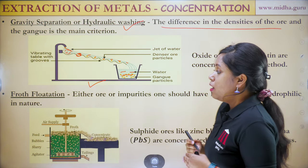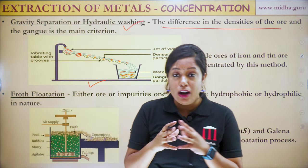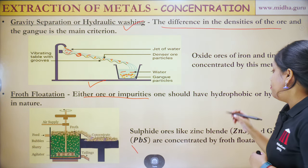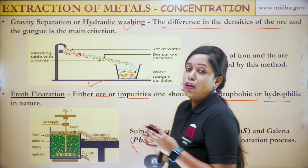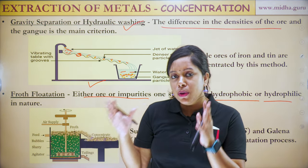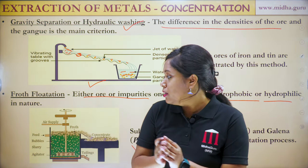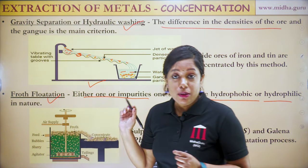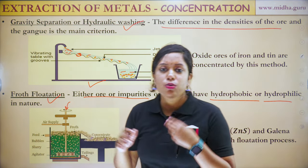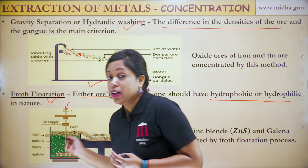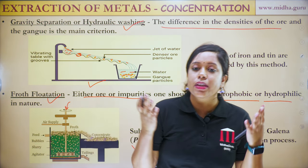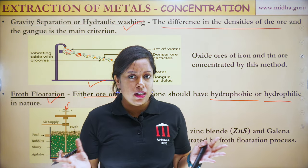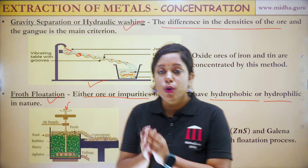The second method is froth flotation. The principle is that either the ore or the impurities should have hydrophobic or hydrophilic nature. If the ore is hydrophobic and impurities are hydrophilic, we can separate them by this method. We take the ore containing impurities, pass compressed air through the suspension, froth forms carrying the ore, and when we separate that froth we get our ore while impurities remain dissolved in water.